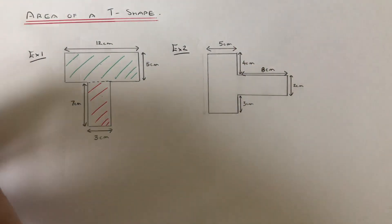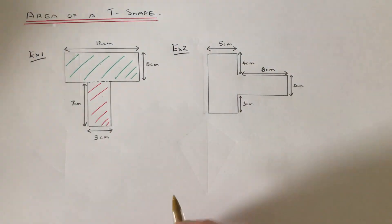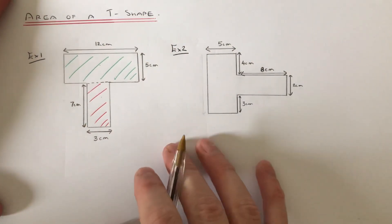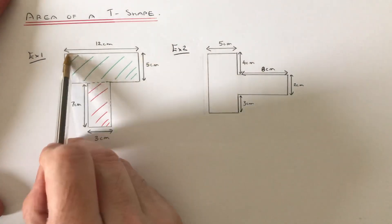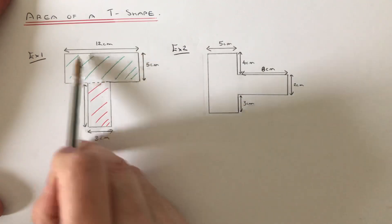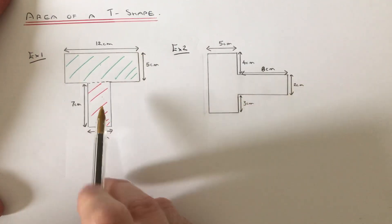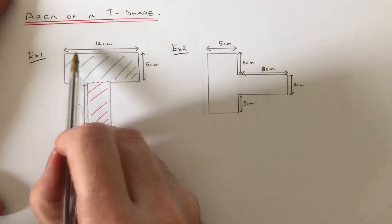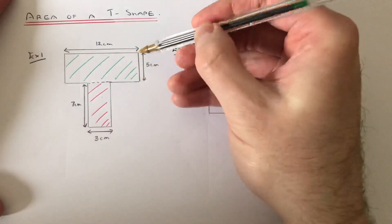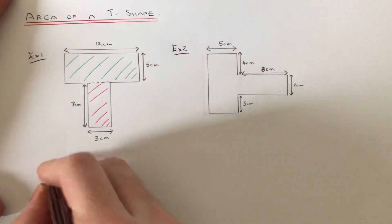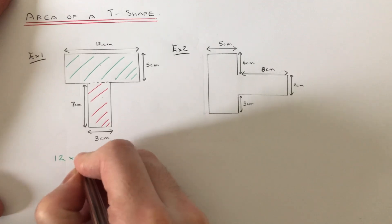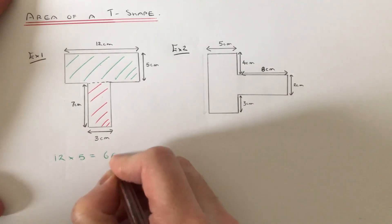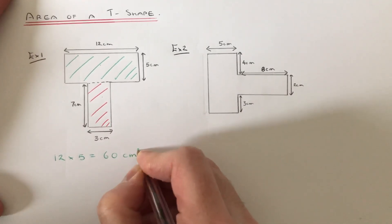So let's do the green rectangle first. To find the area of the rectangle you just multiply the two side lengths of the rectangle together. So for the green one it will be 12 multiplied by 5. So 12 times 5 is 60cm squared.